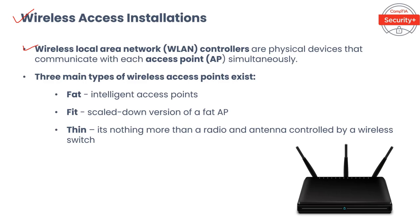The level of control and management an access controller needs to provide depends on the type of access points implemented. There are three main types of wireless access points: fat, fit, and thin. Fat wireless access points, also sometimes called intelligent access points, are all-inclusive — they contain everything needed to manage wireless clients, such as ACLs, QoS functions, VLAN support, and band steering. Fat APs can be used as standalone access points and do not need an AC; however, this makes them expensive.